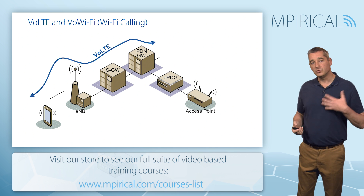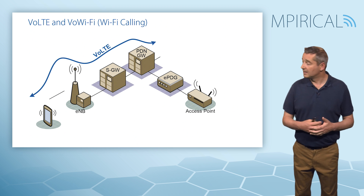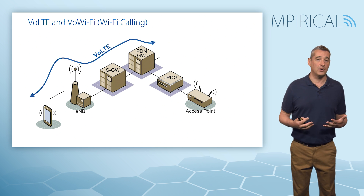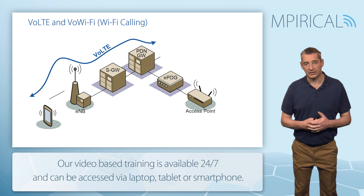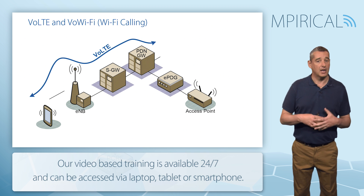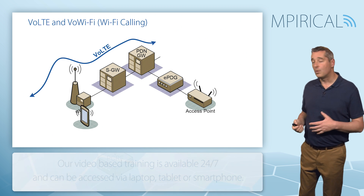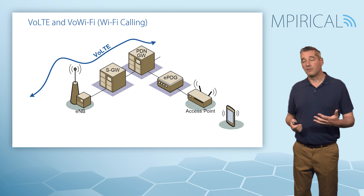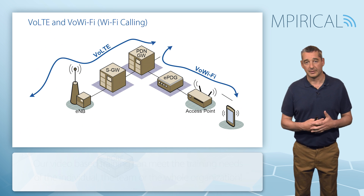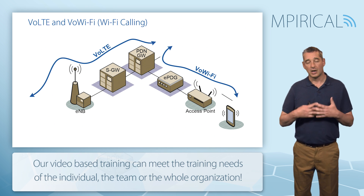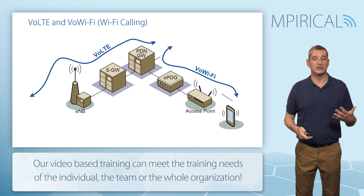Once we wish to support Wi-Fi calling, we need to add some additional network elements. Here we can see our access point — our Wi-Fi radio — which connects back into our mobile service provider's network via an ePDG, an evolved packet data gateway. When the mobile moves over onto Wi-Fi, our voice over Wi-Fi will simply pass across these network elements, carried across our Wi-Fi network up through the evolved packet data gateway and out onto the same PDN gateway.